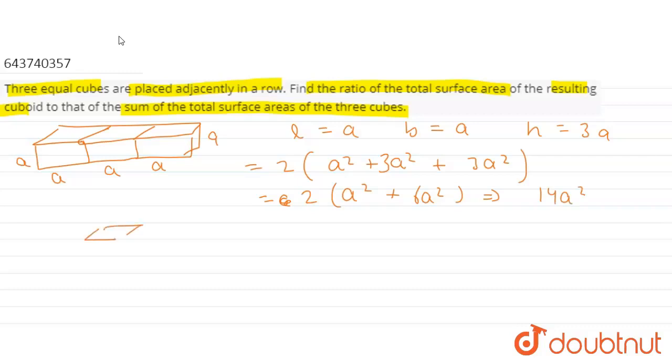Now for each cube we have length equals to breadth equals to height equals to A. And the total surface area of each cube will be equal to A into A into 6 that is 6A square.